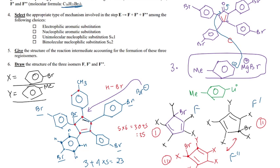The fourth question asks, select the appropriate type of mechanism involved in the step E to F plus F prime plus F double prime among the following choices. We know that this is a nucleophilic substitution. And it's a unimolecular nucleophilic substitution. It's an SN1 type of reaction. Why? Because there is involvement of the formation of the carbocation. And that's the only rate determining step. Once the carbocation is formed, Br minus will quickly react with it to form the final product. And so SN1 is the appropriate mechanism.